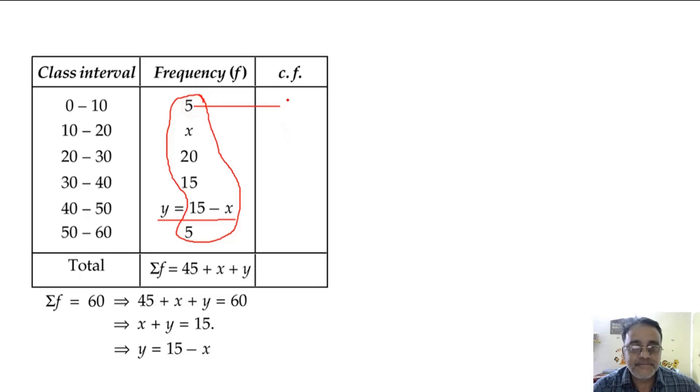And we can write y as 15 minus x. Now I will replace this y by 15 minus x. Whether this is clear? If you replace y as 15 minus x, only one variable will be there in this column. Now let us start with calculating cumulative frequency. First one tell me. 5. Second? x plus 5 or 5 plus x. Third one? 25 plus x. And the fourth one? 40 plus x.